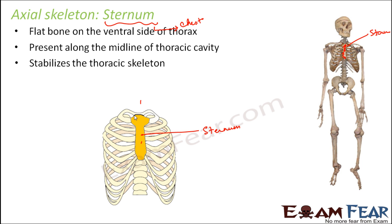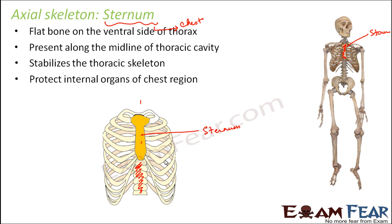The sternum stabilizes the thoracic skeleton. It provides support to the ribs together with the vertebral column — the vertebral column is present on the dorsal side and the sternum on the front side, and together they support the rib cage. It also protects the internal organs of the chest region, such as the heart.